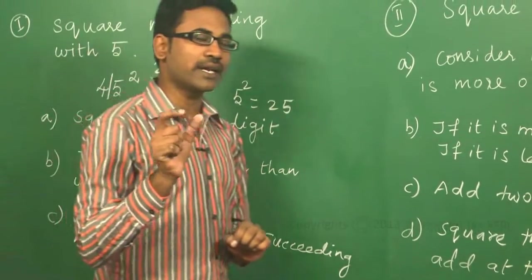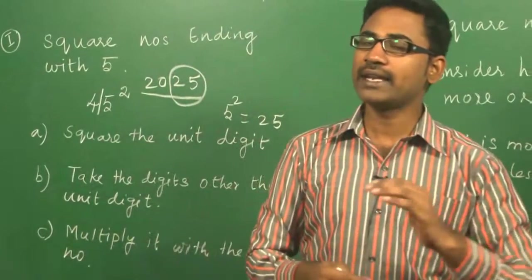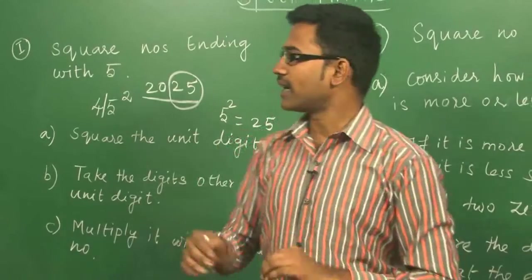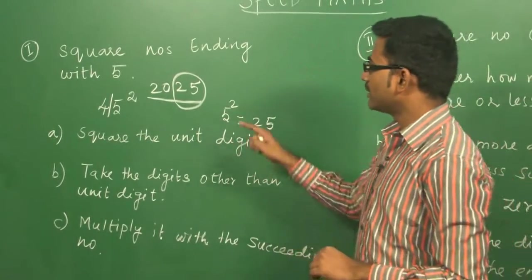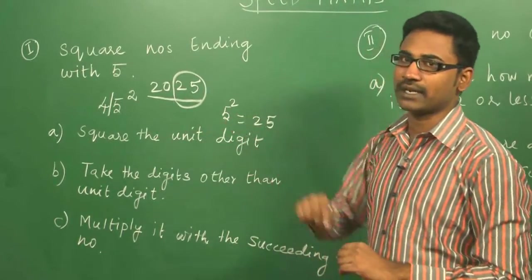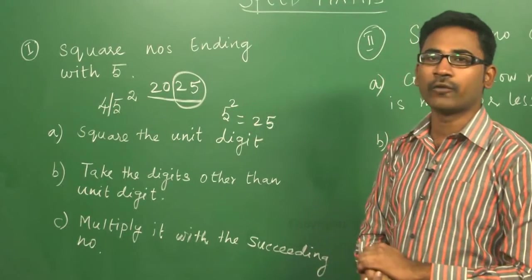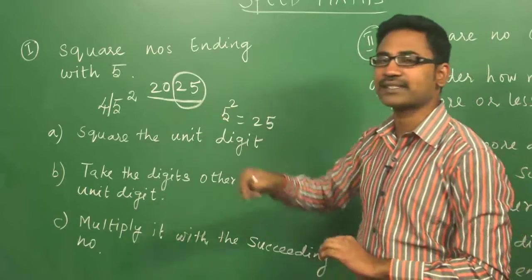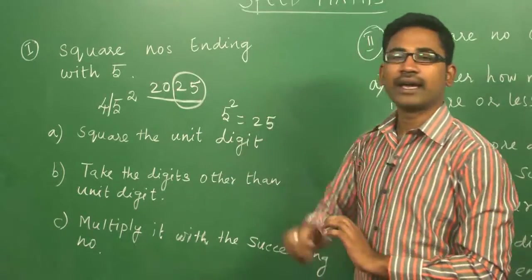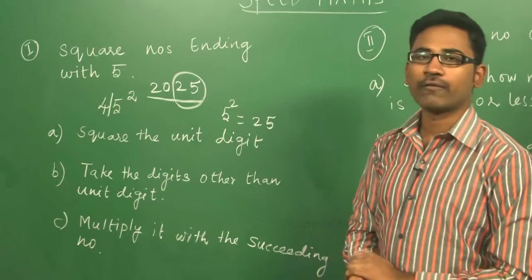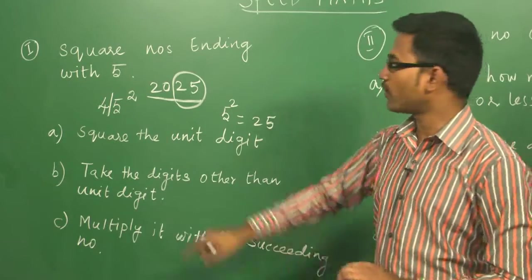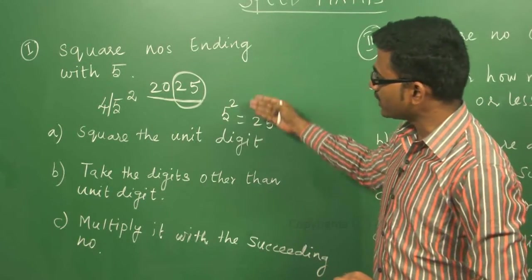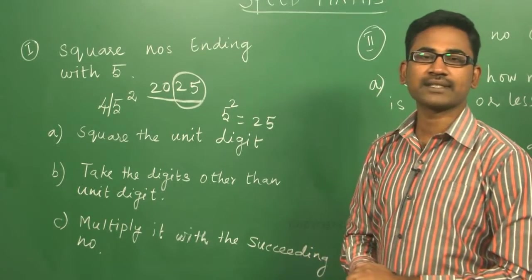You take the unit digit and square it. For any number ending with 5, 25 will be the fixed part. The other part is calculated by multiplying the remaining digits by their succeeding number. In this case, we have 4, the succeeding term is 5, so 4 into 5 gives 20. Therefore 2025 is the square value for 45. This is the shortcut to find the square of numbers ending with 5.